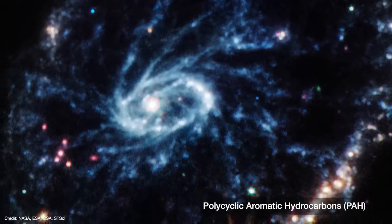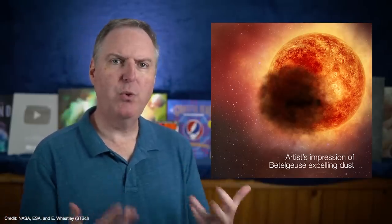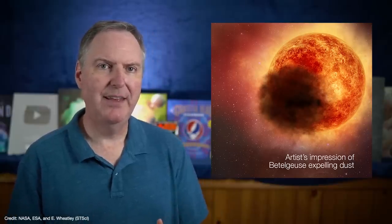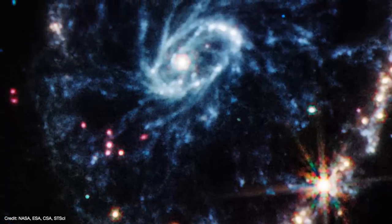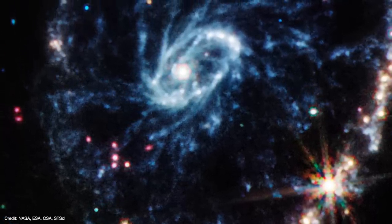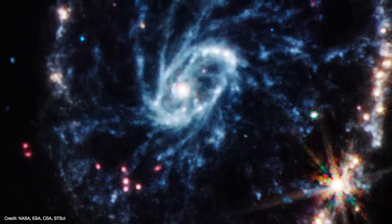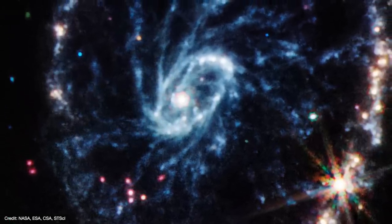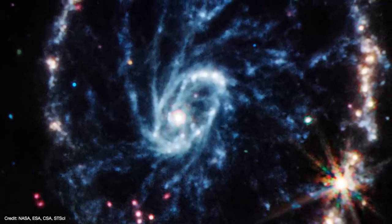PAHs are essentially soot. Now the thing about dust is that it's created by dying stars as they belch out huge quantities of complex organic molecules as they age. So it could be that this is relatively new dust that was expelled by dying stars in the wake of the shockwave. On the other hand, it could be that the dust was already there before the collision, got plowed by the shockwave, and has been spiraling back down along the spokes ever since.